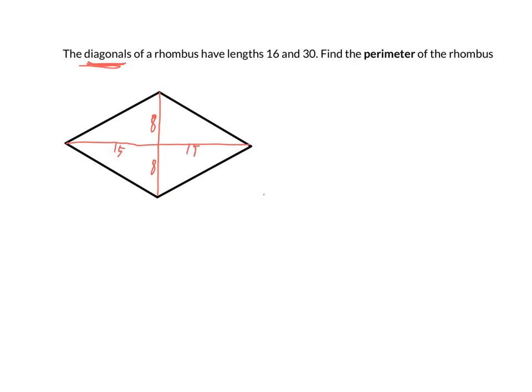The other thing we know about a rhombus is that the diagonals are perpendicular, so they make right angles in the middle. And so what we see here is you actually have four right triangles inside that rhombus, and they all have the same side lengths.